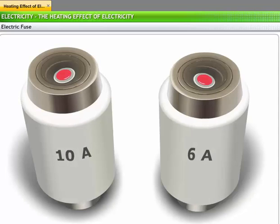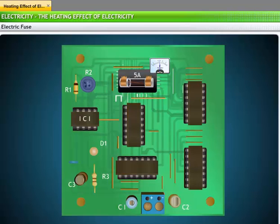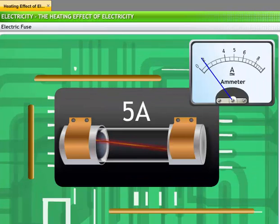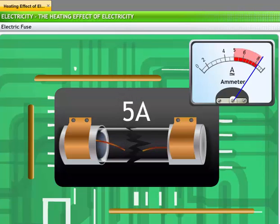Electric fuses are rated according to the current that they can withstand. For example, a fuse rated 5 ampere can withstand current flow to the maximum of 5 ampere. If the current flowing through that circuit exceeds 5 ampere, the fuse wire melts from the heat, cutting off the power supply through that circuit.